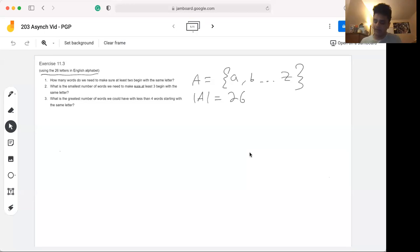Getting started with the first part: how many words do we need to make sure at least two begin with the same letter? If we're thinking about pulling words from our set in the worst case, which is what we're going to be thinking about a lot when it comes to this question, we could create 26 words that each started with a different letter of the alphabet, right?